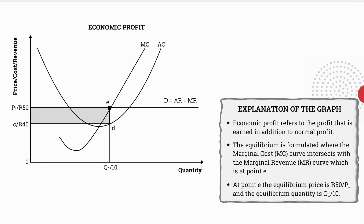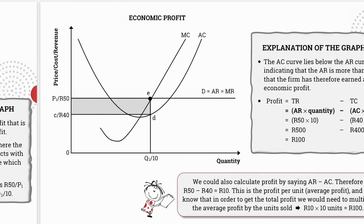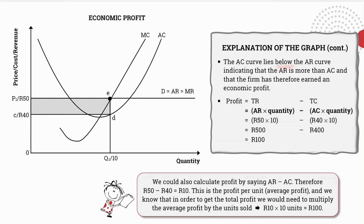Now we've dealt with the drawing of the graph and we're moving on to the explanation. It's always a good idea to start your explanation by defining the concept: economic profit refers to the profit earned in addition to normal profit. The equilibrium is formulated where marginal cost intersects with marginal revenue, at point E. At point E, the equilibrium price is 50 rand (or P1) and the equilibrium quantity is 10 (or Q1). The AC curve lies below the average revenue curve, which clearly indicates that a profit has been earned.